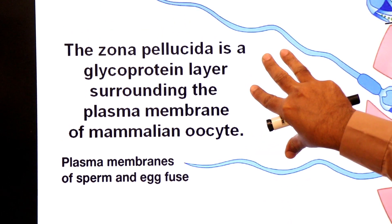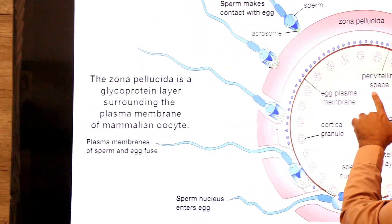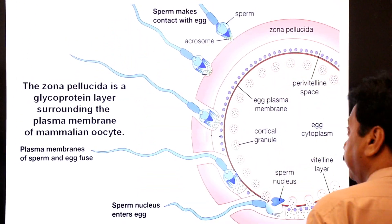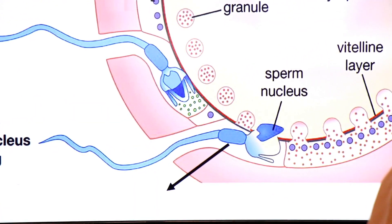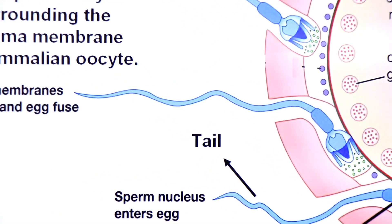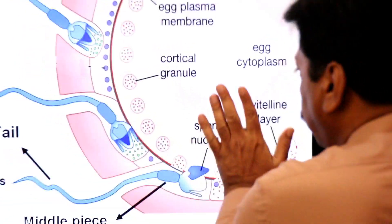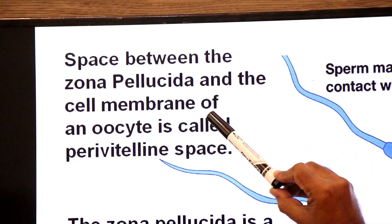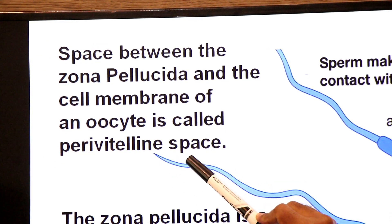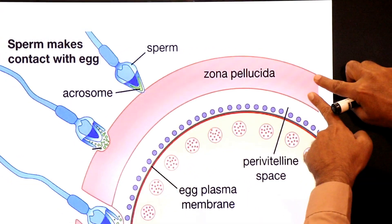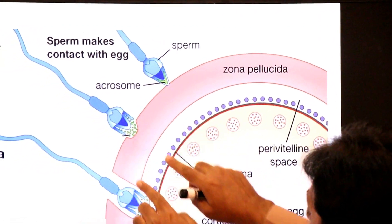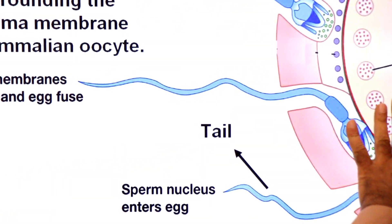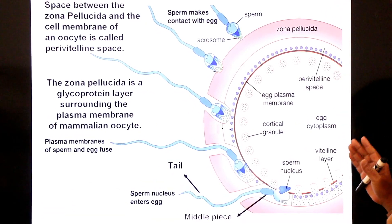The perivitelline space is defined as the space between the zona pellucida and the cell membrane of an oocyte. During fertilization, the acrosome reaction allows the sperm to penetrate the zona pellucida. Only the sperm nucleus enters the egg — the middle piece and the tail are dropped off outside.